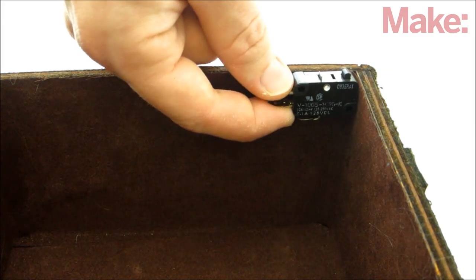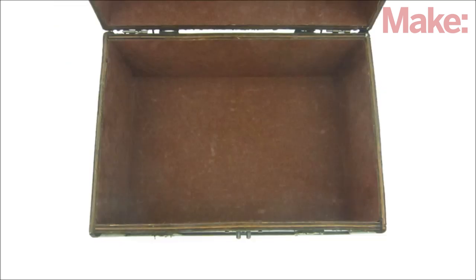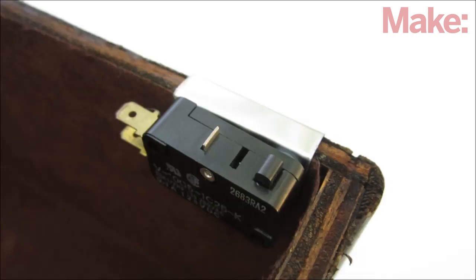We need to mount the switch to the inside of the box just below the front edge. I didn't want to mess up the fabric lining, so rather than attaching the switch directly to the side of the box, I made a small metal bracket to hold it in place.